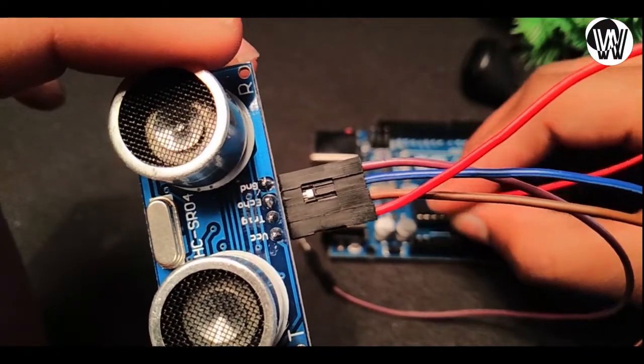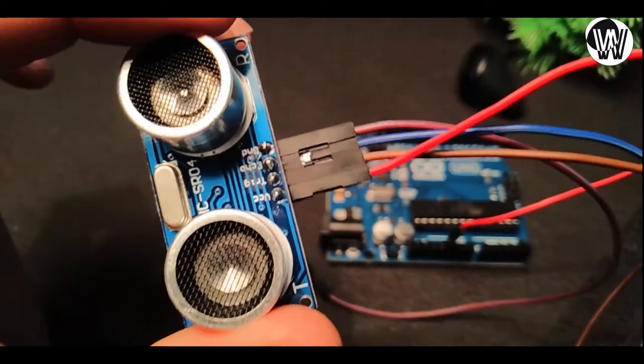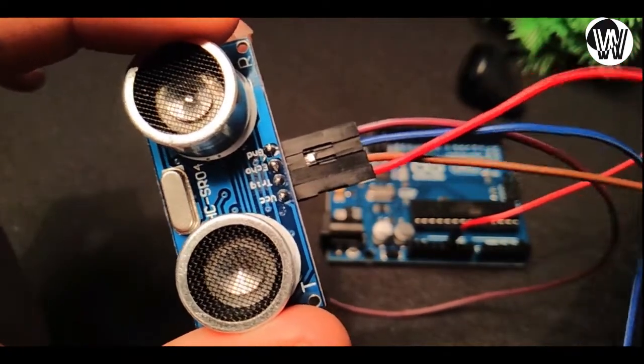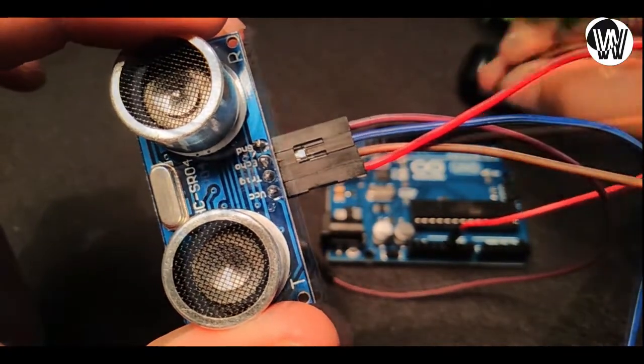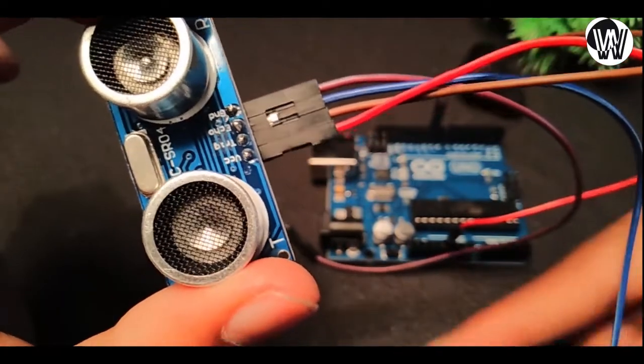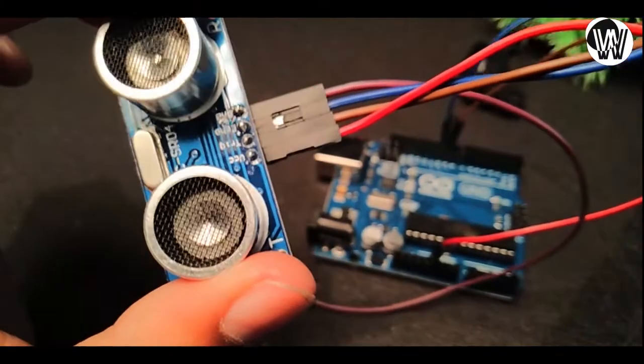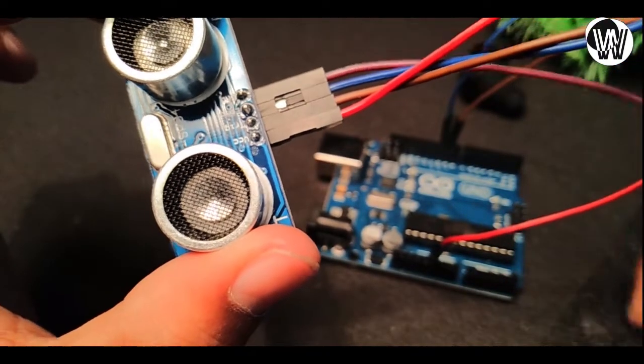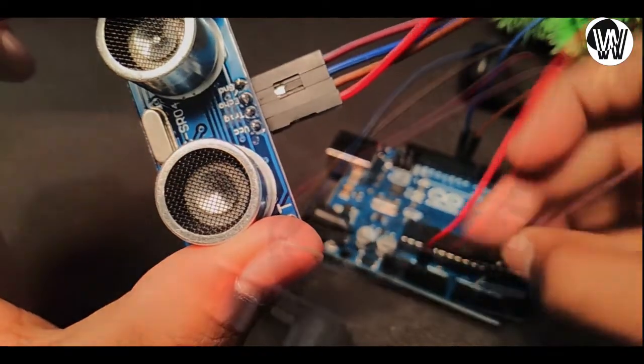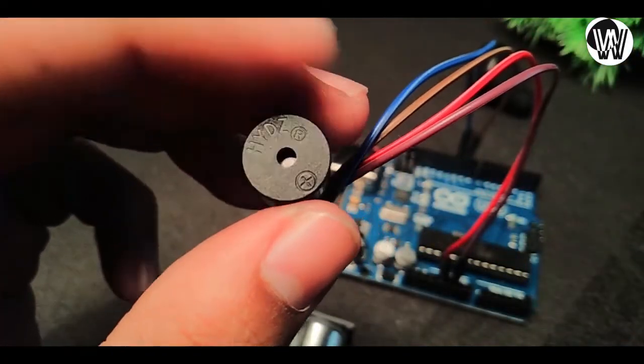Now connect the VCC pin of the ultrasonic sensor to the 5-volt of the Arduino UNO board, the trigger pin to digital pin 9, the echo pin to digital pin 10, and the ground pin to the ground pin of the Arduino.